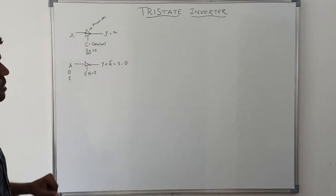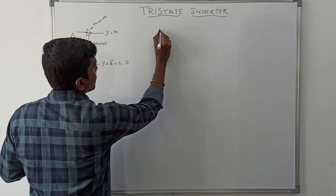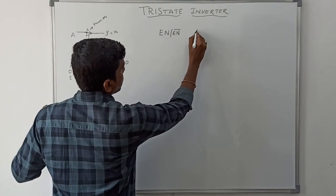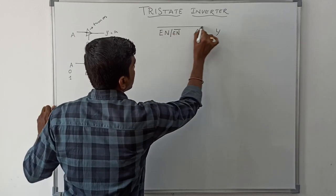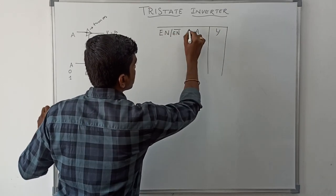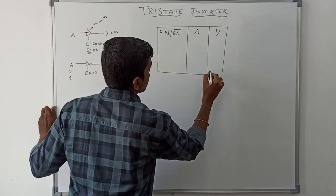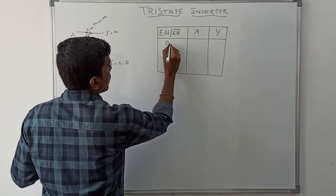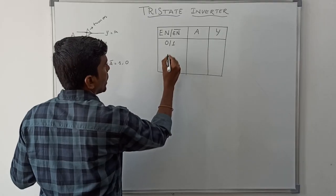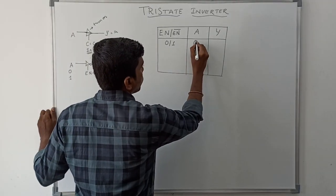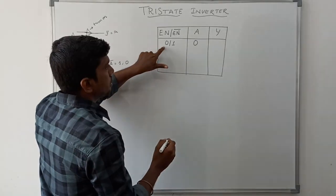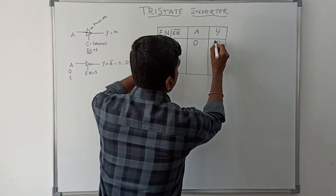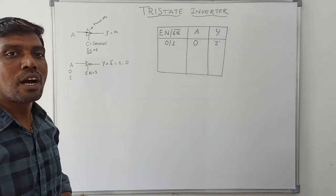The truth table for the tri-state buffer has enable, enable bar as controlling inputs, A as the primary input, and Y as the output. The tri-state buffer only turns on when enable equals one. In the first case, enable equals zero and enable bar equals one; input A is zero. Since enable is zero, the device is off and the output is Z, representing the high impedance state.